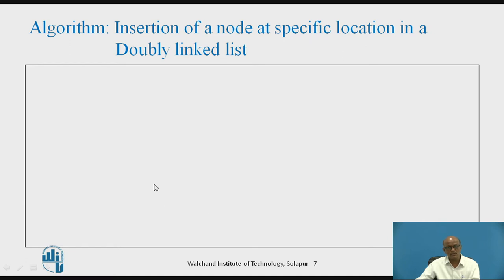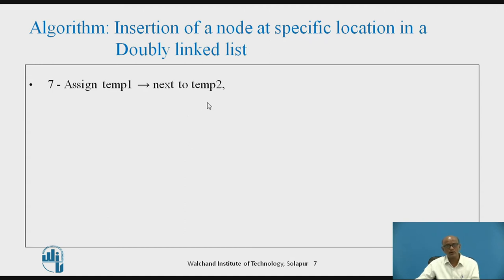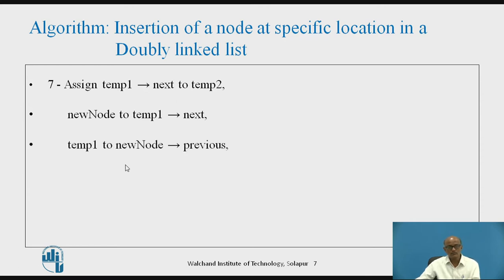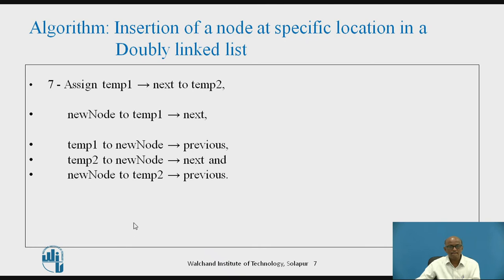If we find the specific location, we assign temp1's next to temp2, so temp2 holds the address of the next node of temp1. Then we assign the address of the new node to temp1's next. Then we assign temp1 to new node's previous, and temp2 to new node's next. Finally, we assign the value of new node to temp2's previous. This is how the node is inserted at a specific location.